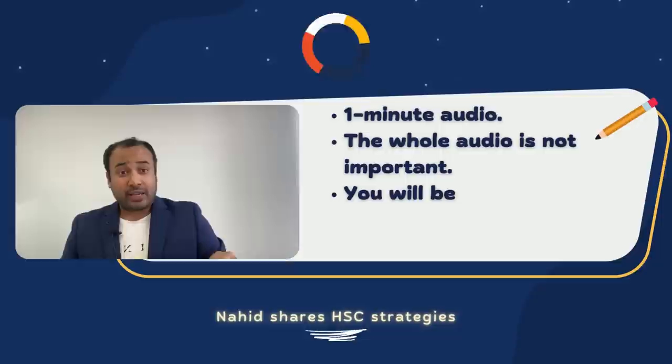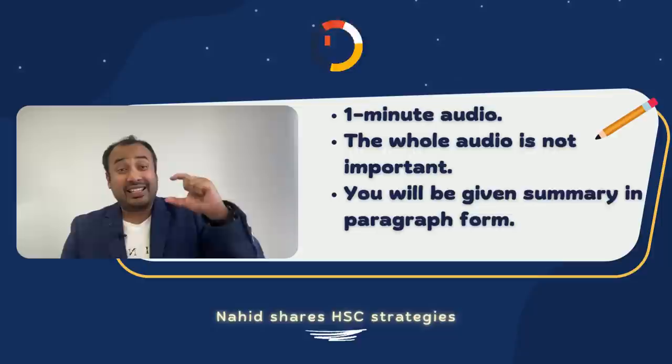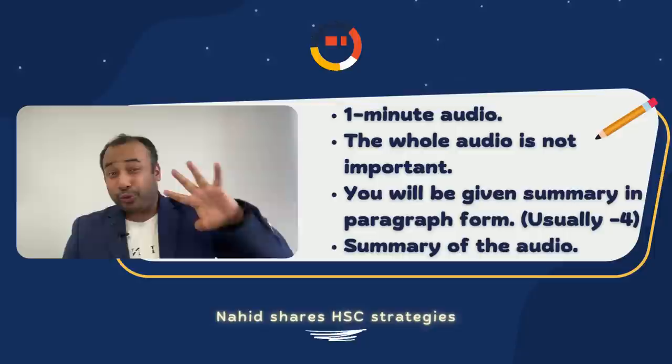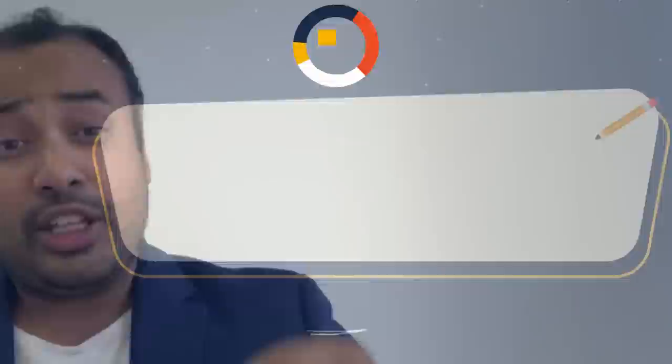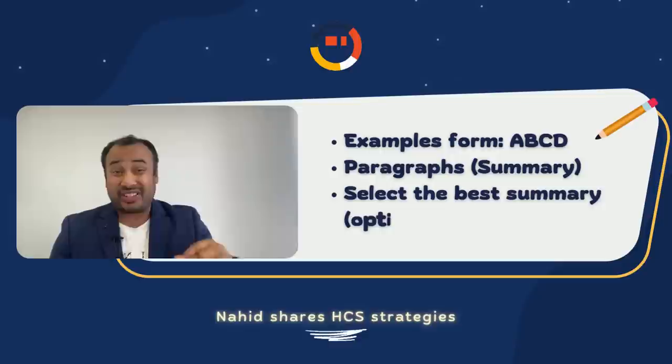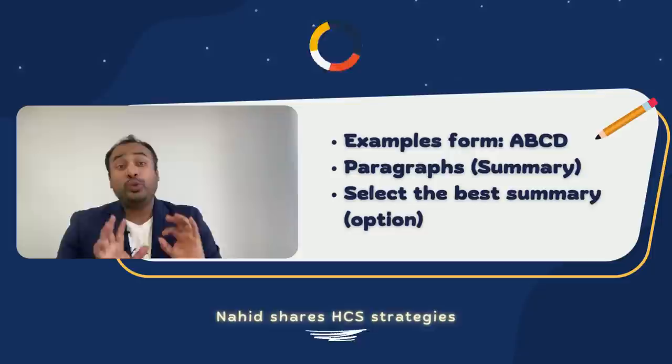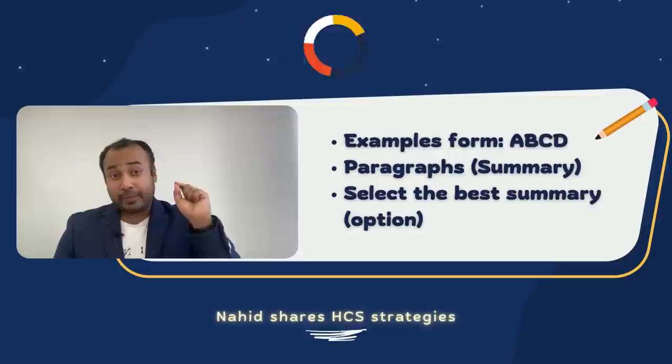You will listen to one minute of audio and then the summary of the audio will be shown on your screen. You usually get four options — sometimes, very rarely, you might get five — but the standard in the PTE exam is four options: A, B, C, and D. They come in paragraph form because they are summaries, and you need to select the best paragraph.